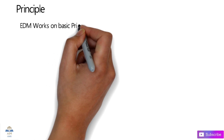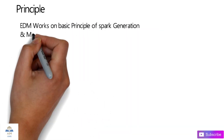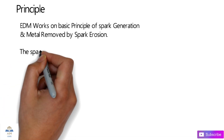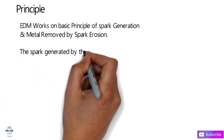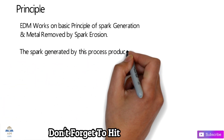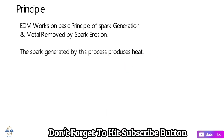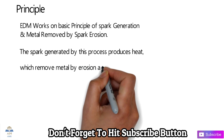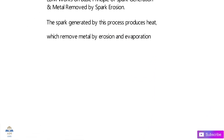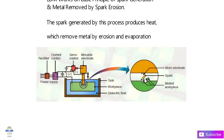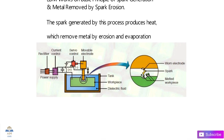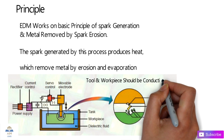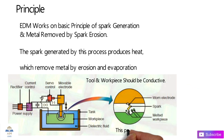EDM works on the basic principle of spark generation — that is, metal is removed by spark erosion. The spark generated by this process produces heat, and this heat ultimately removes the metal by erosion and evaporation on the surface of the workpiece. The tool and the workpiece must both be conductive, and the whole process takes place in dielectric fluid.